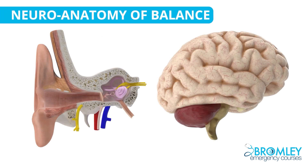Let's start by looking at the neuroanatomy of balance. I haven't included detail about all the posterior column afferents here. A lot of information on posture and balance — including joint position sense — comes to the brain and vestibular nuclei from throughout the body. The parts I'm going to focus on, as they're relevant to the pathologies we'll be looking at, are the inner ear and the brain.